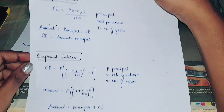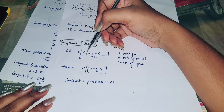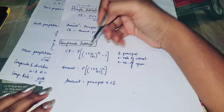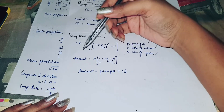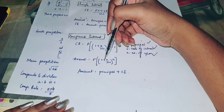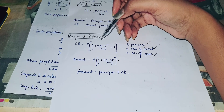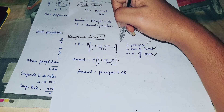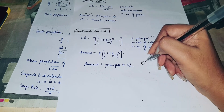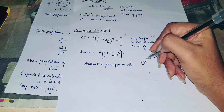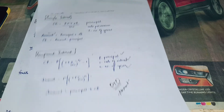And the last thing is Compound Interest. Compound Interest formula is P into (1 plus R by 100) to the power of N minus 1, where P stands for Principal, R is the rate of interest, and N stands for number of years. The Amount formula is P into (1 plus R by 100) to the power of N. Note: Amount equals Principal plus Compound Interest — that is, Amount is the total value you get after adding interest to the initial invested money.